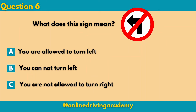Question 6: What does this sign mean? There is an arrow pointing towards the left direction and a red line going through. Whenever there is a red line going through, it is prohibiting you from doing something. So is it A. you are allowed to turn left, B. you cannot turn left, or C. you are not allowed to turn right? The correct answer for this will be B.